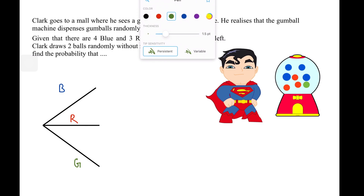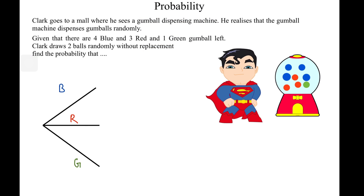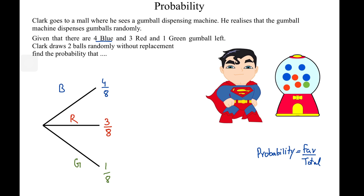Let's figure out the probabilities using the basic formula: probability equals favorable outcomes over total outcomes. The probability of blue is 4 over 8, since there are four blue gumballs out of eight total. The probability of red is 3 over 8, and the probability of green is 1 over 8 since there is one green and eight total.